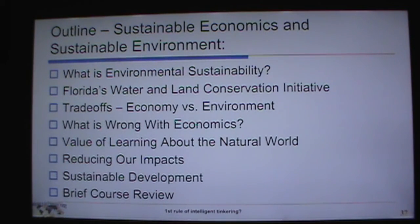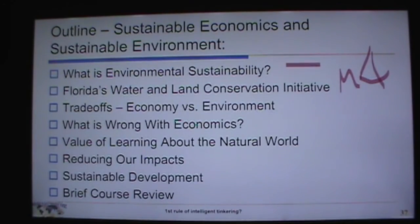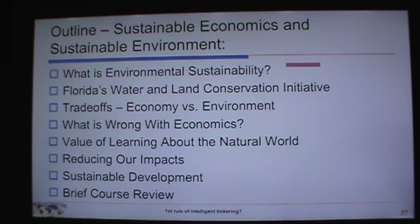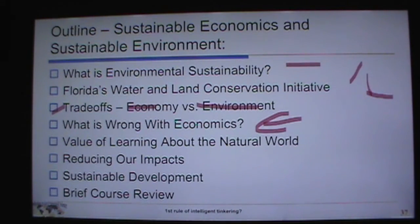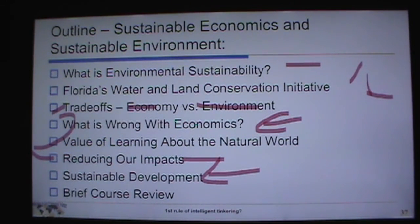To summarize what we talked about today: what is environmental sustainability; Amendment 1; tradeoffs between the economy and the environment; what's wrong with economics — externalizing and internalizing costs; the value of learning about the natural world; reducing our impacts; and the goals of sustainable development, some of which are controversial. References include the annotations in the previous slides and the primary textbook, Principles of Environmental Science by Cunningham and Cunningham.